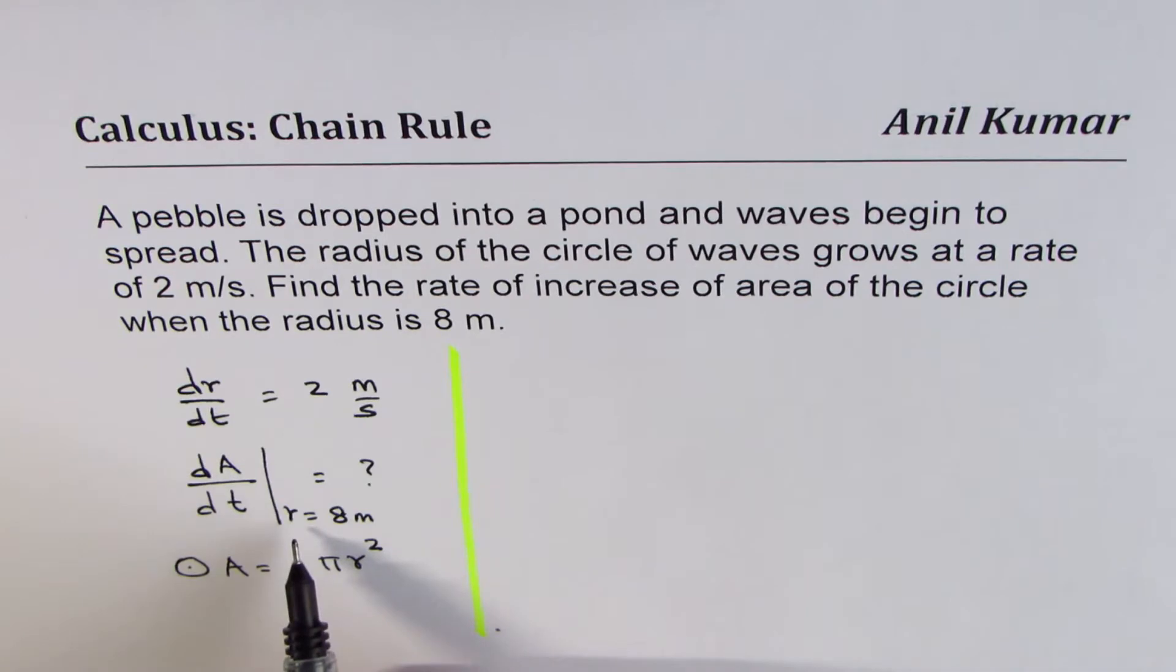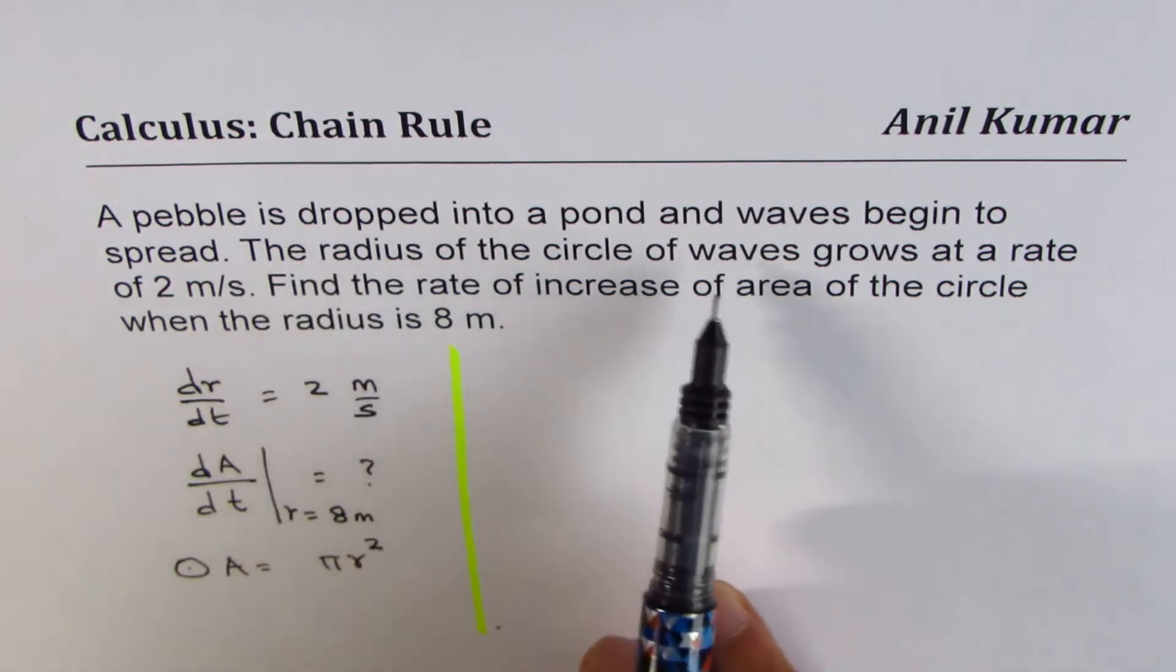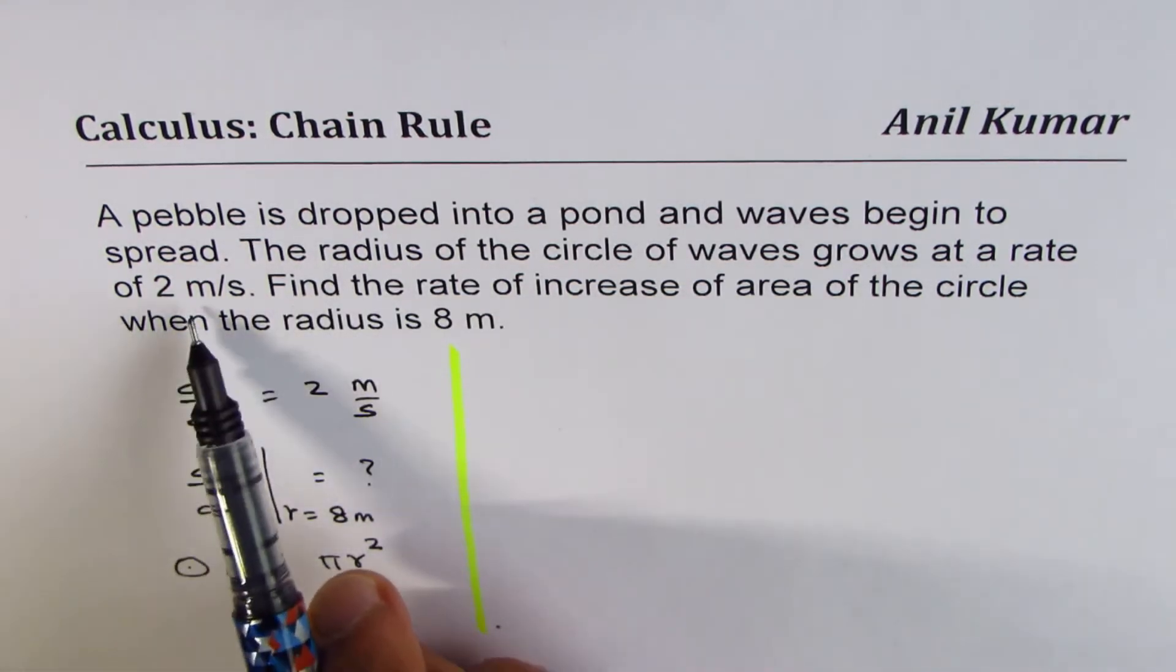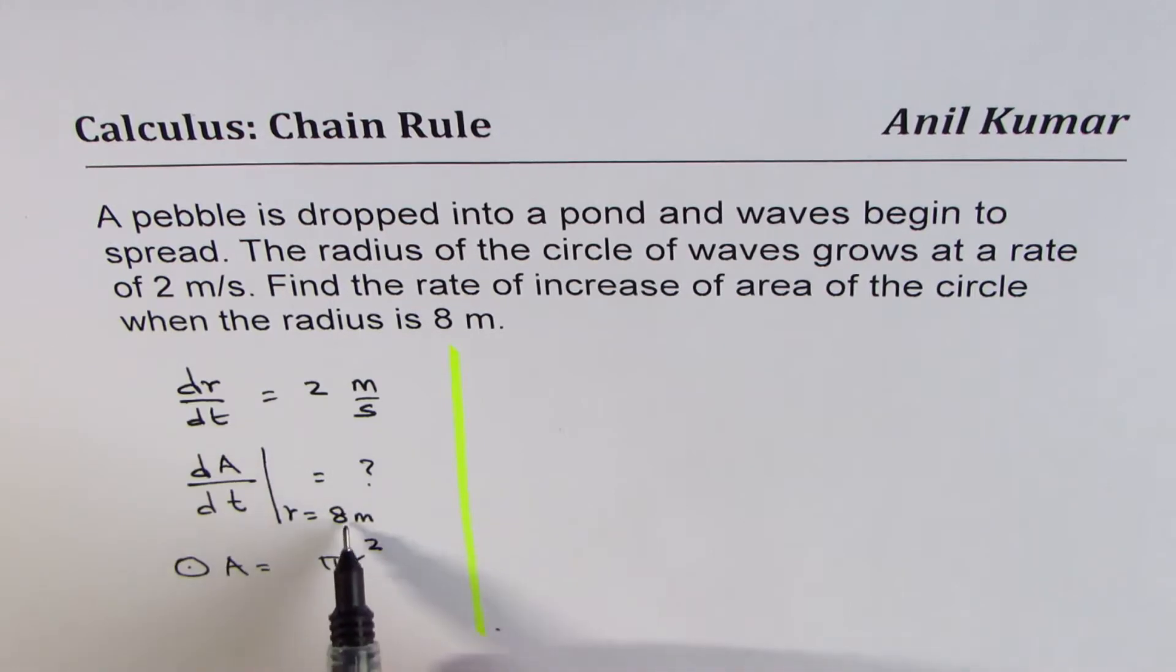Now since we need to figure out the rate of change of area with respect to time, when radius is 8 meters, let us find how much will the time be. It says that radius of the circle of the wave grows at a rate of 2 meters per second. So when will it be 8 meters away? It is going every second by 2 meters.